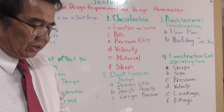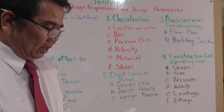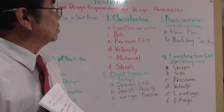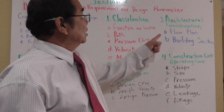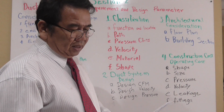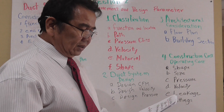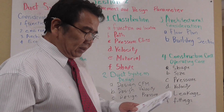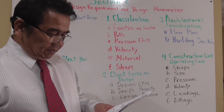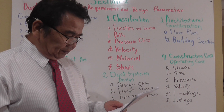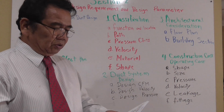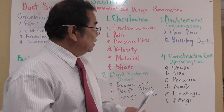Now we're going to the architectural consideration. The system must be compatible with the building and its specifications. The architectural consideration involves floor plans and building sections. Floor plans establish the horizontal relationship, while the building section establishes the vertical relationship of the duct — meaning the duct that goes in the vertical position.